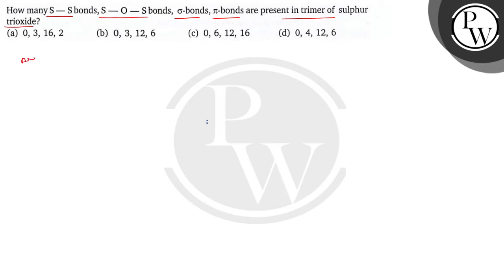Let's do the question. It is trimer of sulfur trioxide, so let's draw the structure of this. Each sulfur will have double bonds with two oxygen atoms. And if you see the structure of the trimer, there is S-O-S bond. This is the structure of the trimer of sulfur trioxide.